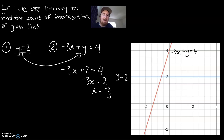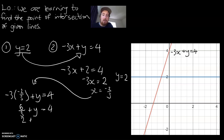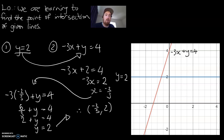We now need to substitute x back into our equation to confirm the y value. So: negative 3 times negative 2 over 3 plus y equals 4. Negative 3 times negative 2 is 6, so that becomes 6 over 3 plus y equals 4, which is 2 plus y equals 4, meaning y equals 2. Our point of intersection is negative 2 over 3, comma 2. Looking at the graph, that makes sense — it's clearly at y equals 2, and approximately at the negative two-thirds mark on the x-axis.